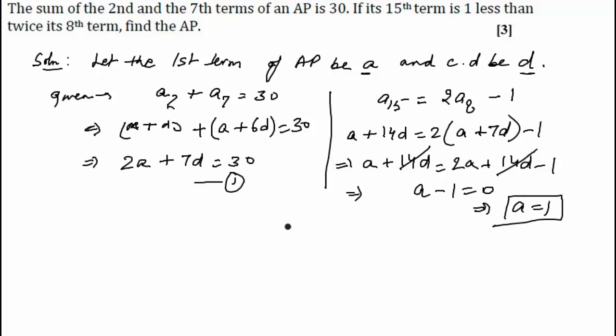Putting this value of a equals 1 here, we get 2 times 1 plus 7d equals 30. So 2 plus 7d equals 30. This implies 7d equals 28, which implies d equals 4.